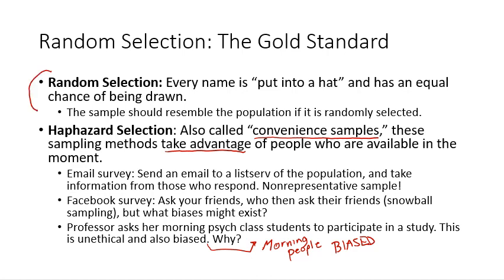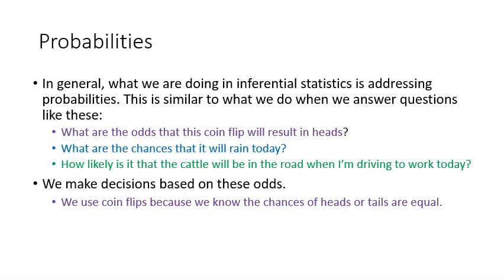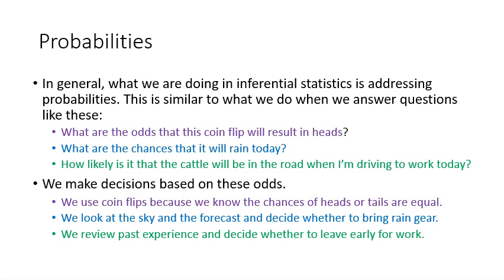So random selection is really the only way to get away from these kinds of biases. So in inferential statistics, we're relying on probabilities and we do this all the time. Like you all know the answer to the question, what are the odds that a coin flip will result in heads? You all know the answer, what are the chances that it will rain today? Or how likely is it that the cattle will be on the road when I'm driving to work today? We do these little estimates in our heads all the time and make decisions based on those little estimates. Bring a raincoat, take a different route. We use coin flips because we know the chances of heads or tails are equal. We look at the sky and forecast and decide whether to bring rain gear. We review past experience and decide whether to leave early for work.